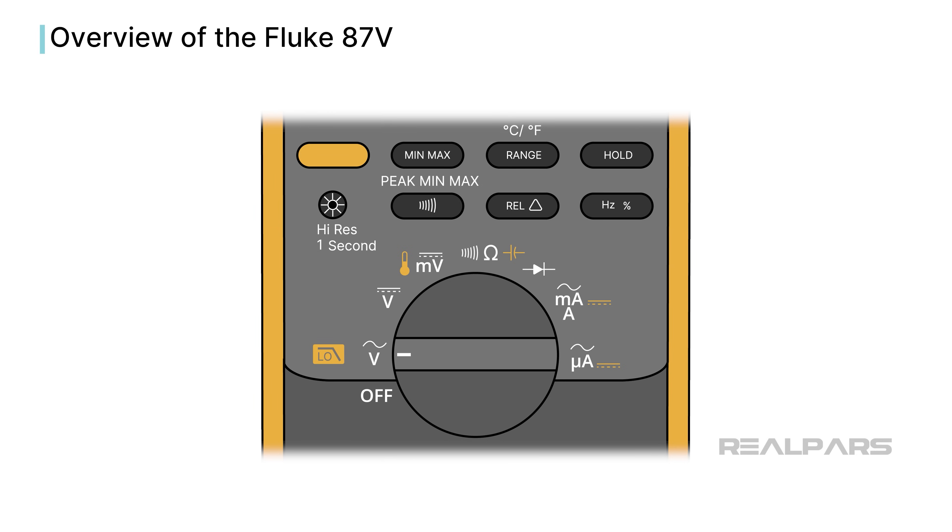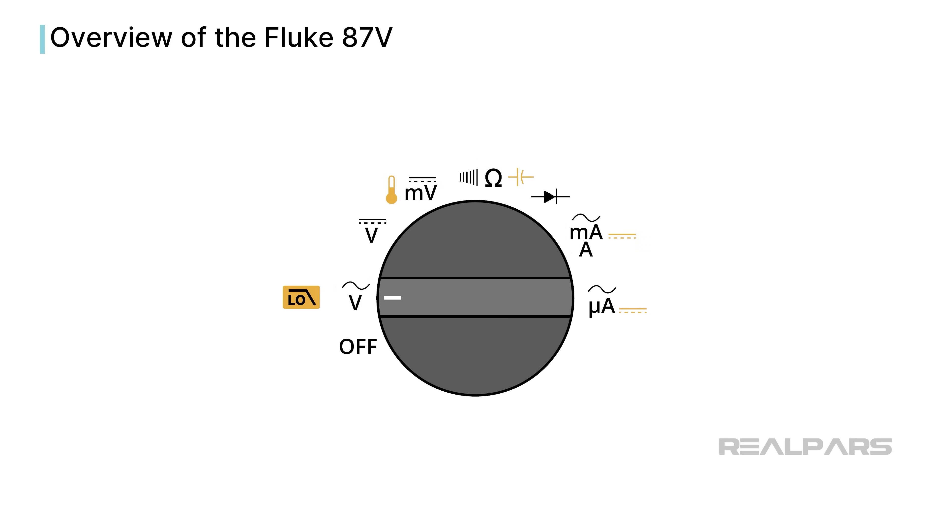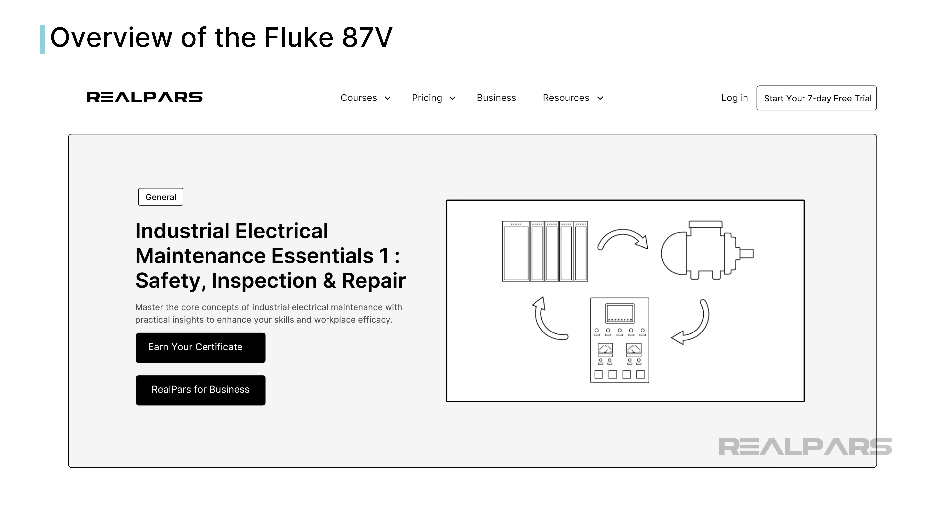In this video, we will use the Fluke 87-5 as our DMM to zero in on voltage, current, and resistance measurements. We talk more about digital multimeters and other common test instruments in the Industrial Electrical Maintenance Essentials 1 course.